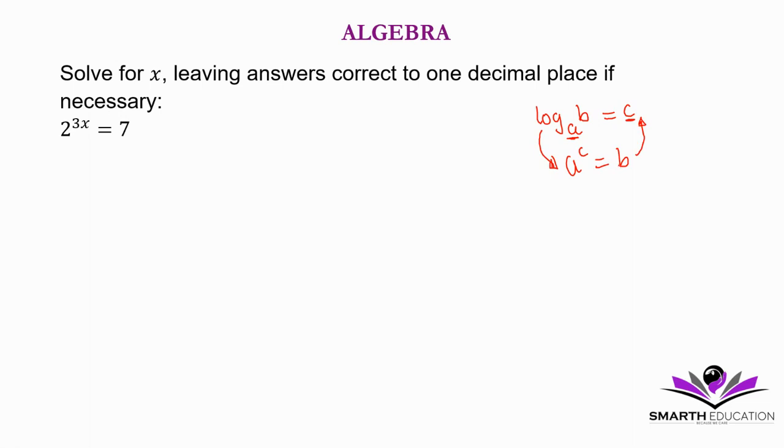So now we have to move from exponential form to logarithmic form. We have our log. What is our base? Base is 2. The argument, or the number there, is 7, is equal to the exponent, which is 3x.